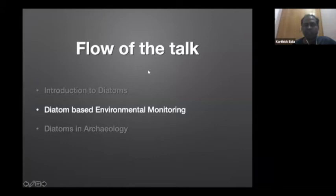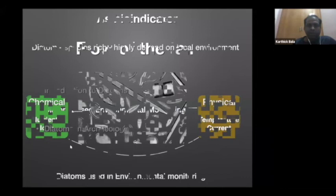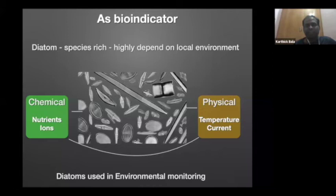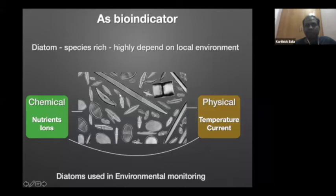Now I will move on to diatom-based environmental monitoring. Diatoms are very particular about their environmental parameters. Physically, diatoms are specific to temperature and current — for example, a diatom which lives in a stream will not live in a lake, because certain groups require current for their living while others prefer stagnant water bodies. Chemically, nutrients such as nitrates and phosphates, and different anions and cations, also determine which diatom community lives in a particular place.